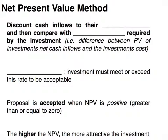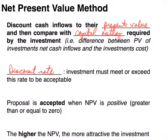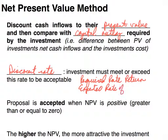When working with the net present value method, we're going to discount the cash inflows to their present value and then compare that with the capital outlay. Capital outlay is simply the cost of the asset. We're always comparing the discount rate — the investment must meet or exceed this rate to be acceptable. This can also be called the required rate of return, or RRR. It can also be called the expected rate of return or the hurdle rate.